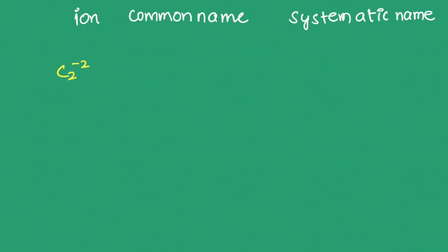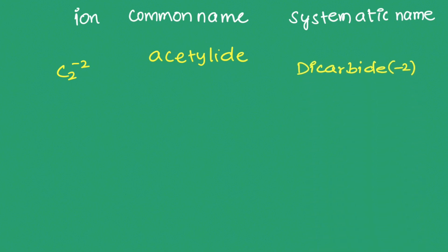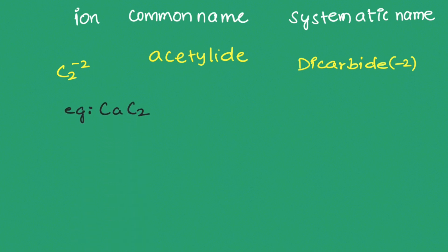The second type of carbide ion is C₂²⁻. Its common name is acetylide and the systematic name is dicarbide(2−). One example is calcium carbide (CaC₂). On hydrolysis, calcium carbide gives ethyne.